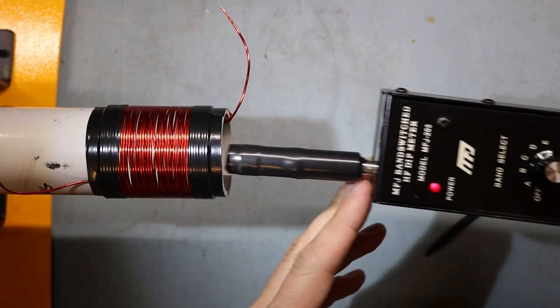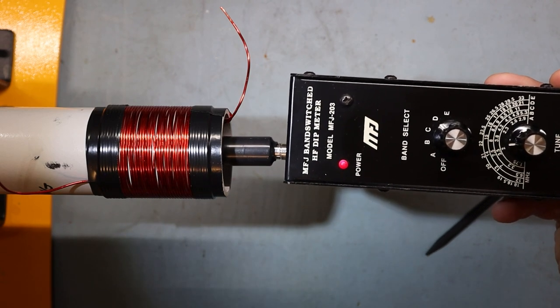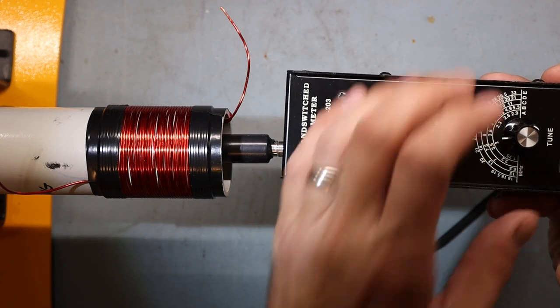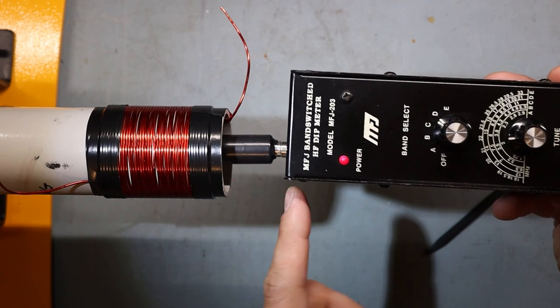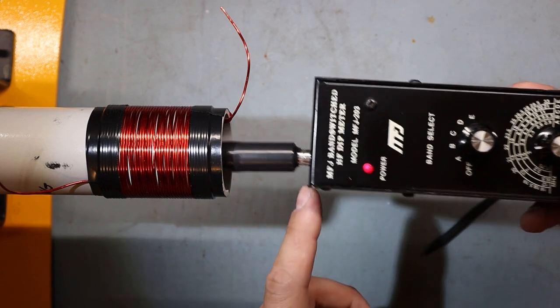So the way that we do this is we bring the coil into the center of the coil we're trying to measure, and we're actually loading the coil down right now which is going to change the resonant frequency. So the next measurement we're going to do, we're going to take it out till it barely dips on the meter, and that's going to be our actual frequency.